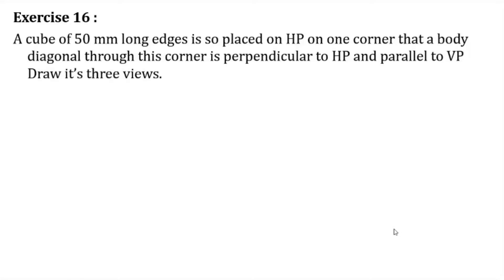This is exercise number 16, another cube problem, almost similar to the previous one. The only difference is that in this case the body diagonal is perpendicular to HP and parallel to VP. A cube of 50 millimeter long edges is placed on HP on one corner, such that the body diagonal through this corner is perpendicular to HP and parallel to VP. Draw its three views.